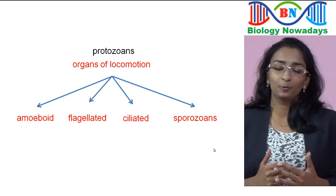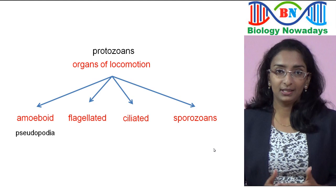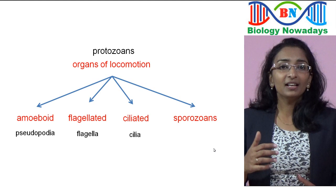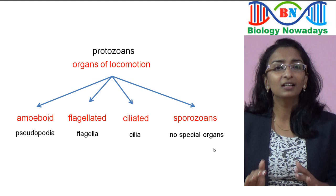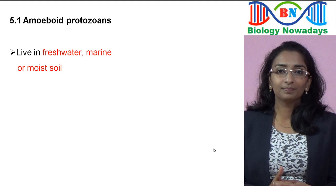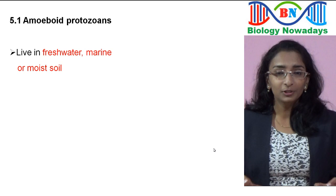Amoeboid protozoans have pseudopodia for movement. Flagellated protozoans move with the help of flagella. Ciliated protozoans have hair-like structures called cilia for movement, whereas sporozoans have no special organs for movement but still show a kind of gliding movement. Amoeboid protozoans are found in freshwater, seawater, or in moist soil. They don't have a particular shape.